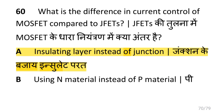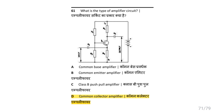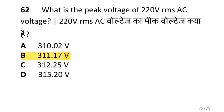What is the difference in current control of MOSFET compared to JFETs? i.e. insulating layer instead of junction. What is the type of amplifier circuit? i.e. common collector amplifier.